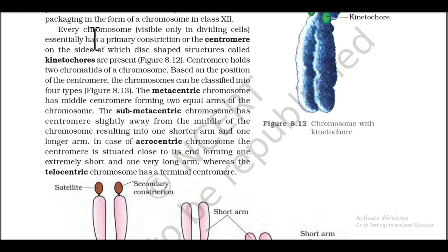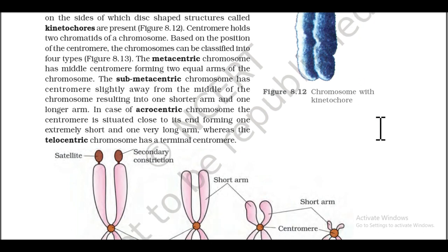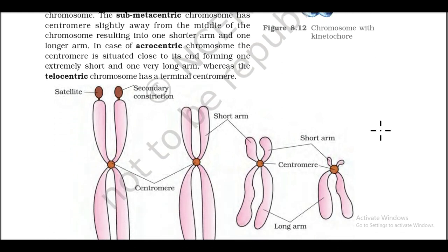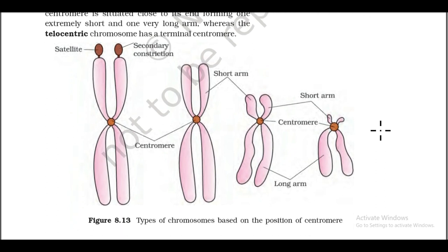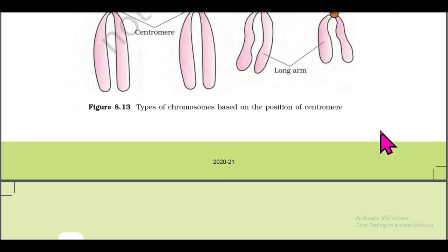Every chromosome, visible only in dividing cells, essentially has a primary constriction called the centromere, on the sides of which disc-shaped structures called kinetochores are present. Based on the position of the centromere, chromosomes can be classified into four types: metacentric (centromere in the middle forming two equal arms), sub-metacentric (centromere slightly away from the middle, forming one shorter and one longer arm), acrocentric (centromere close to one end, forming one extremely short and one very long arm), and telocentric (terminal centromere).